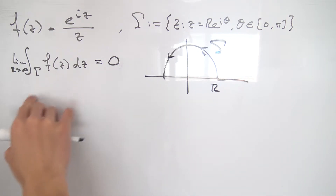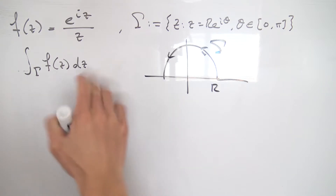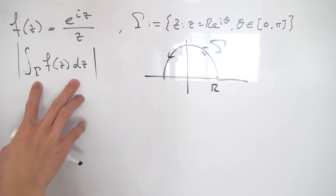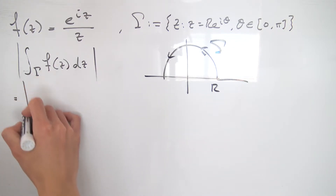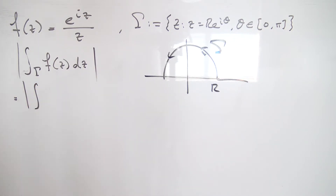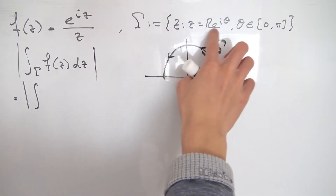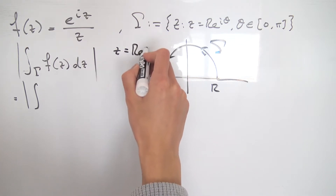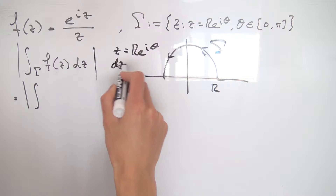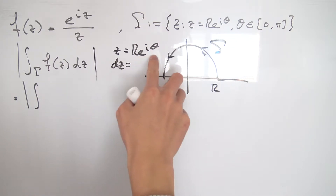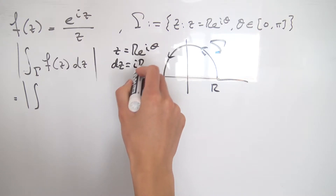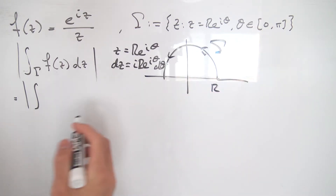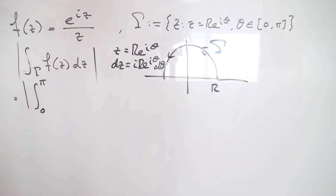Let's first take the absolute value of this integral. We want to find some kind of upper bound for it. We can start by parameterizing the path gamma. For all z on this path, z can be expressed as r times e to the i theta. Differentiating both sides, dz equals i times r e to the i theta d theta, and theta ranges from 0 to pi.